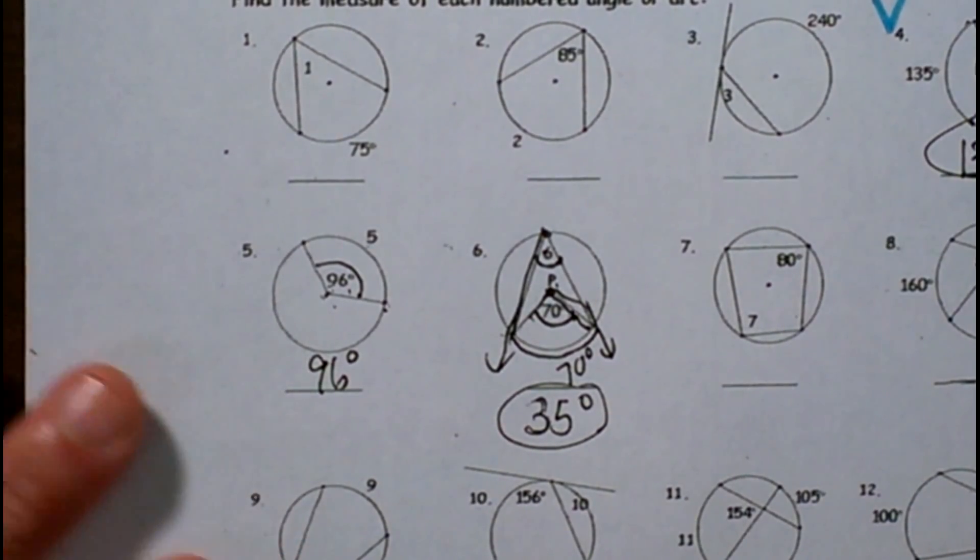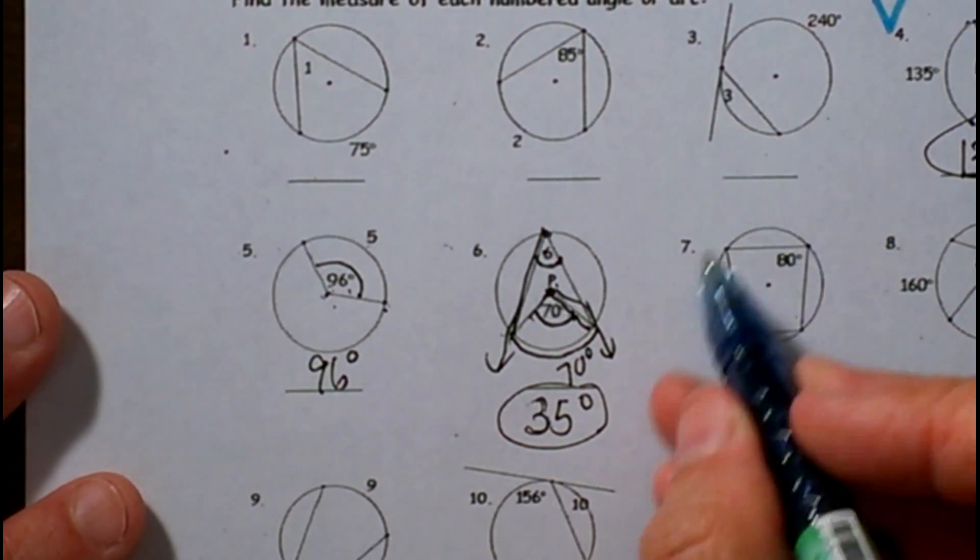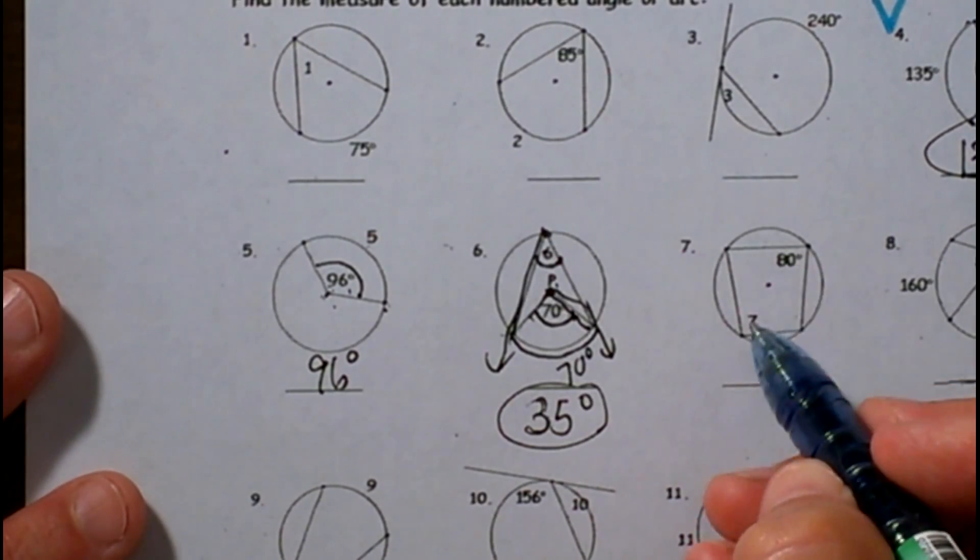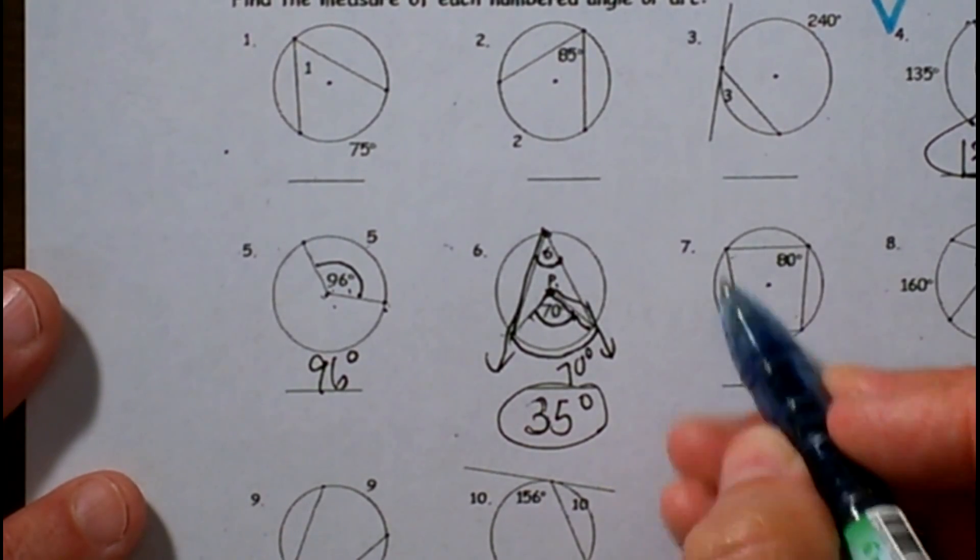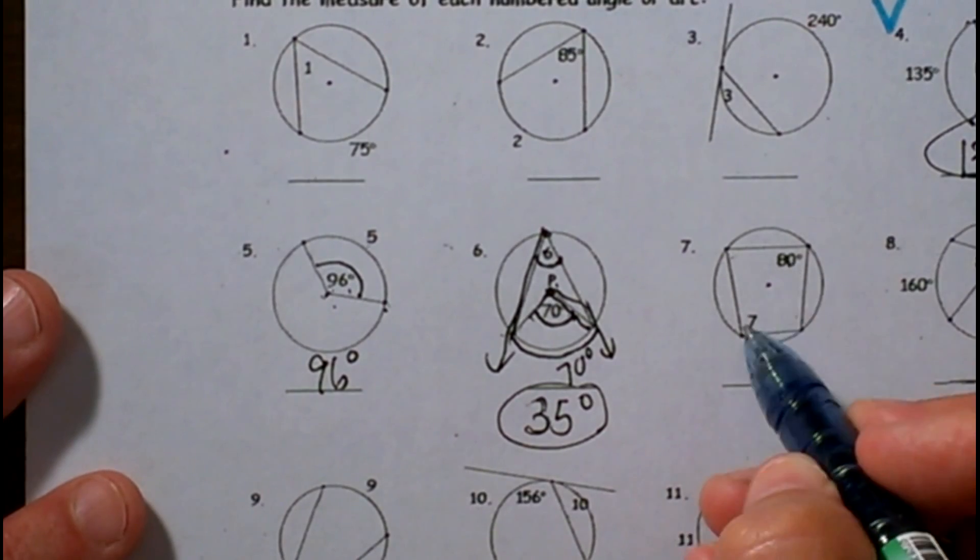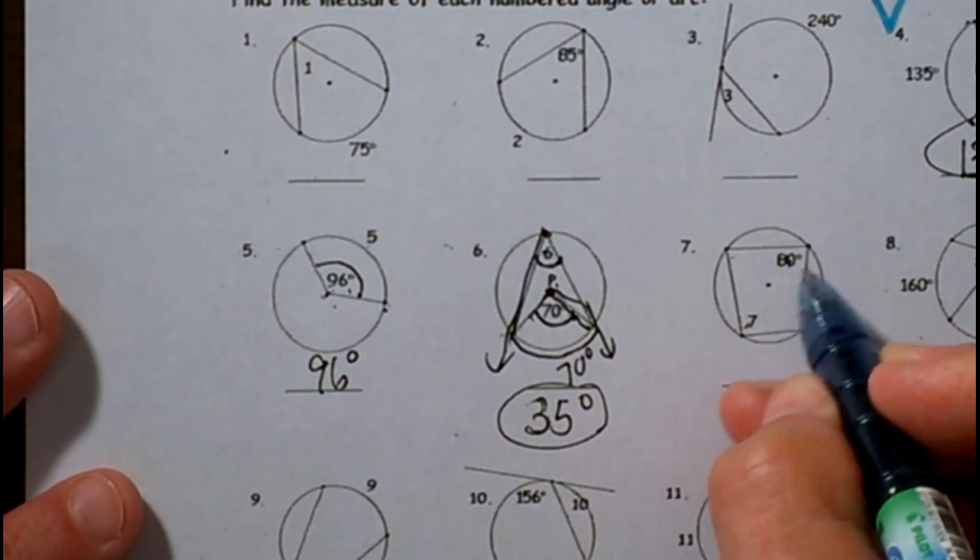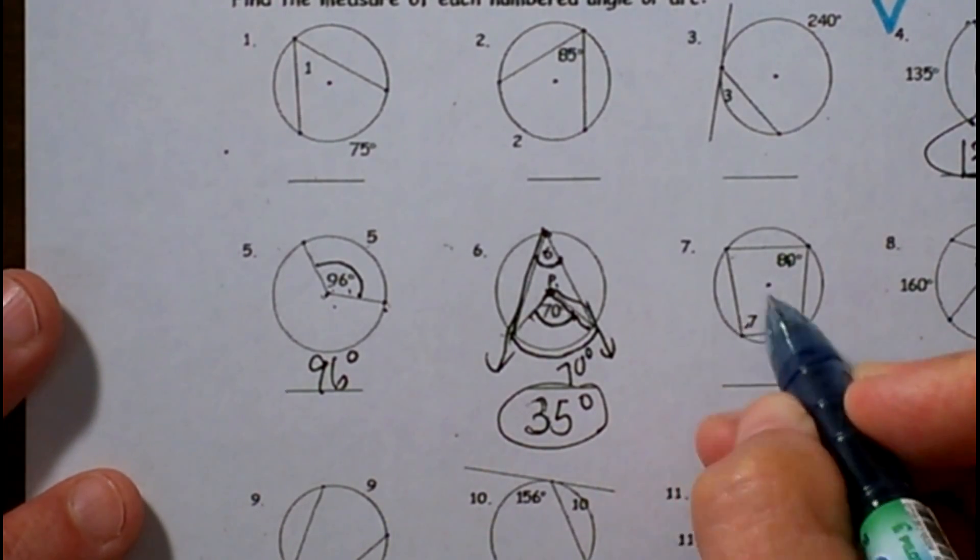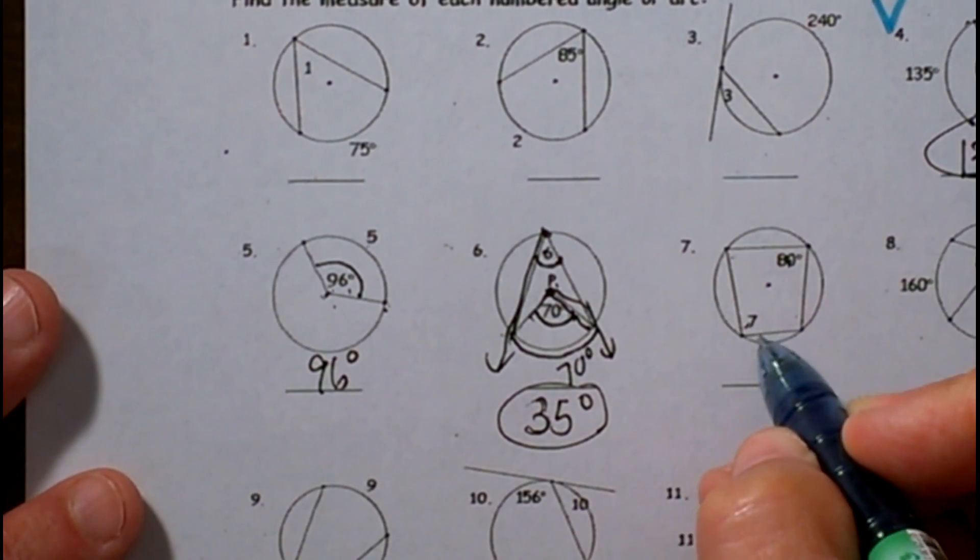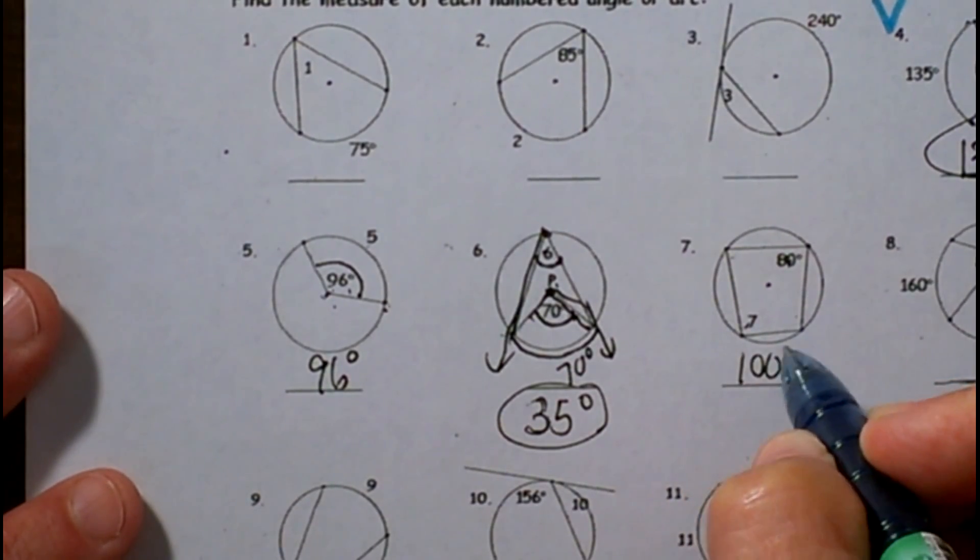Let's look at number 7. Number 7 is a quadrilateral. What do we know about quadrilaterals inscribed in circles? These two angles, the opposite angles, the rule is they are supplementary. So if this angle is 80, then this angle has to help it add to 180, so that means angle 7 is 100 degrees.